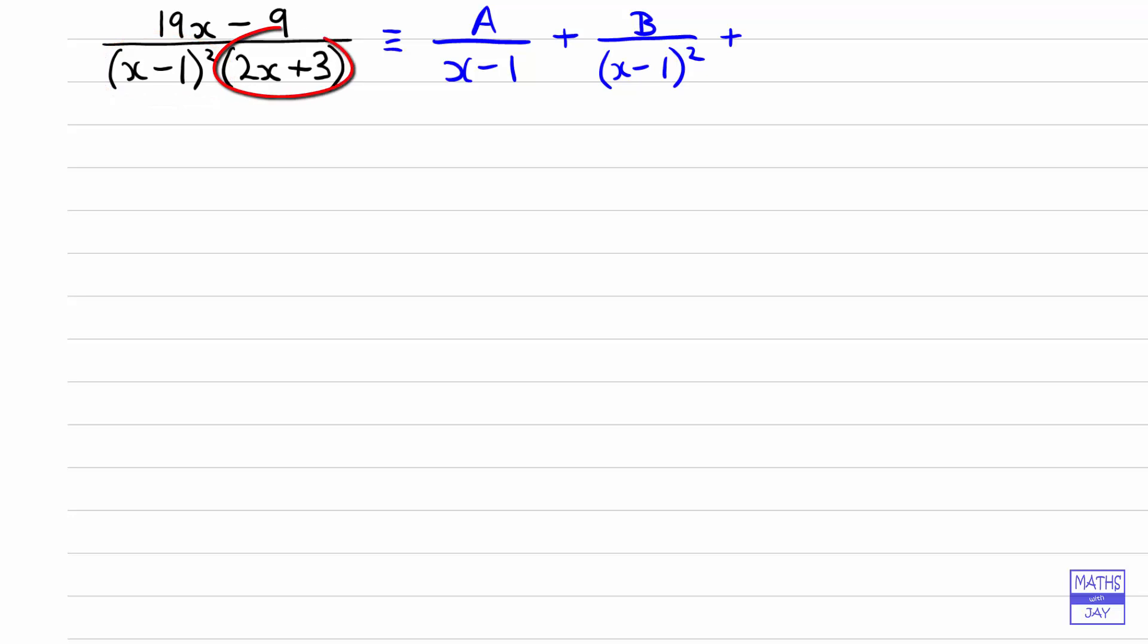And then as usual when we're doing partial fractions, when we've got linear factors, the other factor 2x plus 3 will give us our denominator for our last fraction. And then it's just a matter of adding these fractions together. So when we do that, we know that we're going to get a denominator exactly the same as the one we started with.